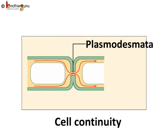The cell membrane is more amazing than just a membrane. At places, cell membranes allow the formation of channels between two adjacent cells for the exchange of materials. These are called plasmodesmata and are found in plant cells.